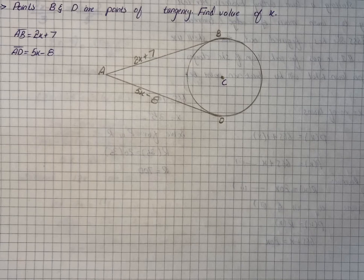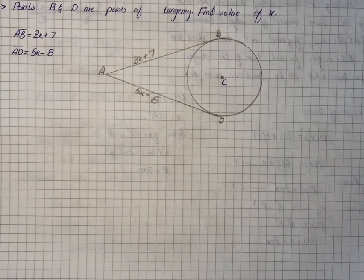the tangent AB and AD. We actually have to find the value of X that will give us the exact value for AB and AD. If from one external point two tangents are drawn to a circle, they have